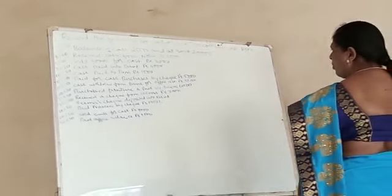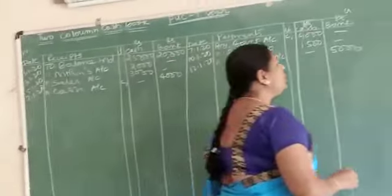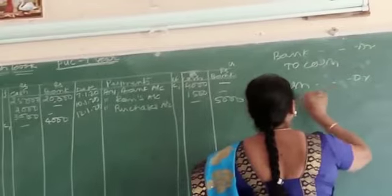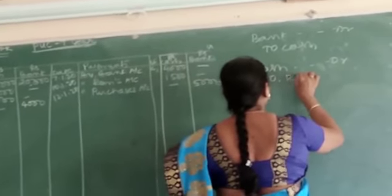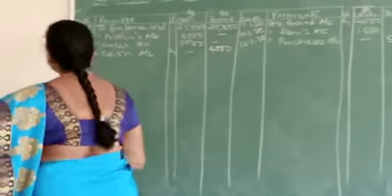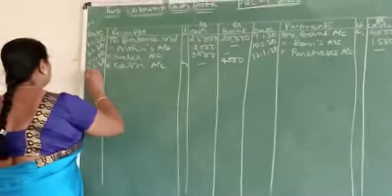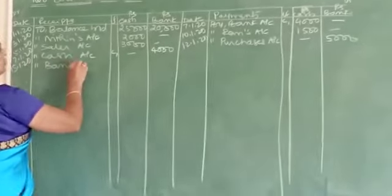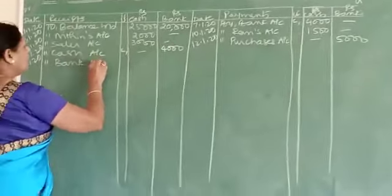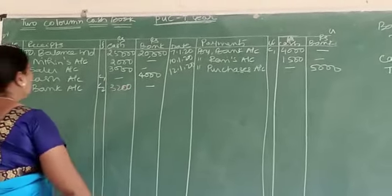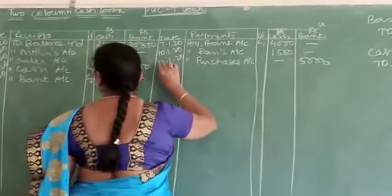Cash withdrawn from bank for office use. Whenever you withdraw cash from the bank for office use, it is a contra entry. The entry is cash account debit to bank account. Come to the debit side, write the date 15, write to bank account, and write it in the cash column, 3,000. Come to the credit side, write it in the bank column.